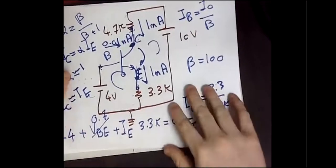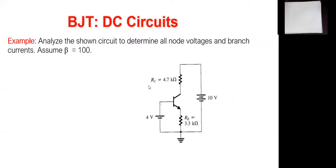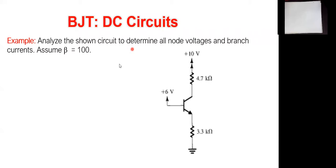Example 2: Same circuit as Example 1 but now with 6V applied to the base instead of 4V. We have 3.3 kΩ at the emitter, 4.7 kΩ at the collector, and 10V supply. The procedure is the same — let's see what changes.